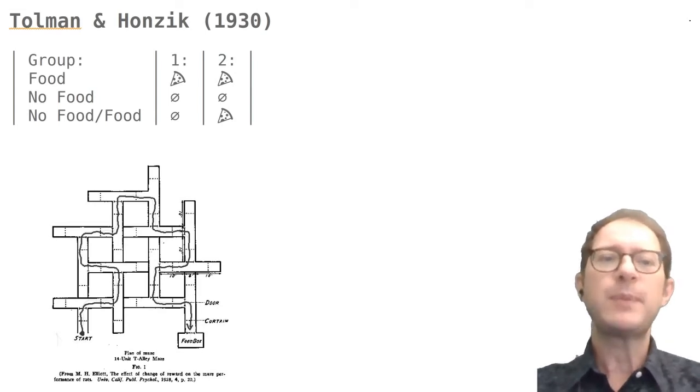Each smaller maze was shaped like a T, and I call it the elementary maze because it puts the rat in front of a single choice, whether to turn left or right. One choice led to the next T maze, the other led to a dead end.